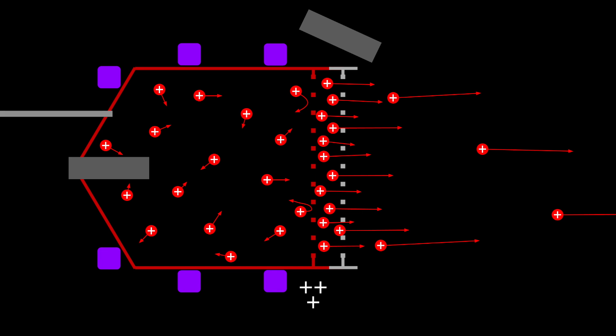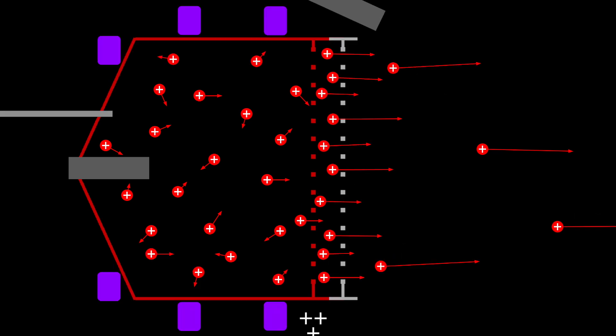One strategy to get around this is to make the grids as close together as possible so that the ions get out of the acceleration region more quickly. But if we make the grids too close, they might touch and short out or create an electrical arc between them. We can also try making the thruster wider so that the ions are more spread out. But larger thrusters are heavier, and it's difficult to manufacture large grids with the high precision needed for ion thrusters. This limitation on the thrust of a gridded ion thruster is why other types of thrusters are more common today.